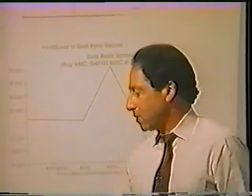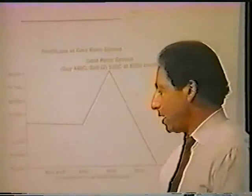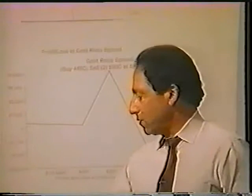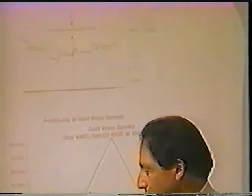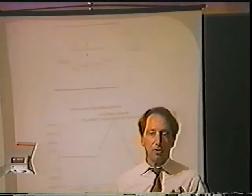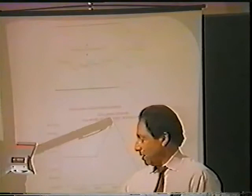Now, what happens if gold starts to move up? That's actually the best of both worlds, because every dollar that gold moves over 440, we collect an extra $100 plus the $500 credit, up until $500. This chart shows how the profit goes up from 440 to the maximum profit at $500. The maximum profit at that level is $6,000 plus the $500 credit. So for every dollar gold goes over 440, we collect $100 in additional premium. At $500, that stops, and we start giving back some of the profit.